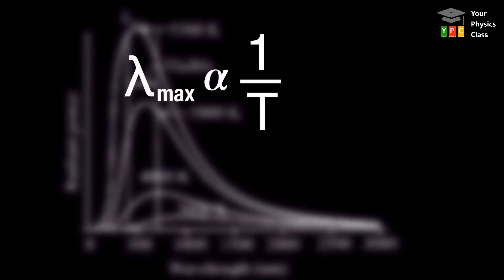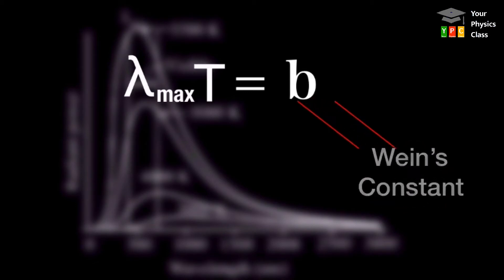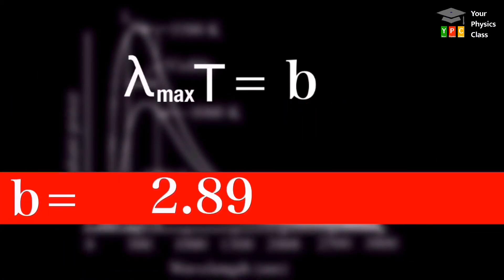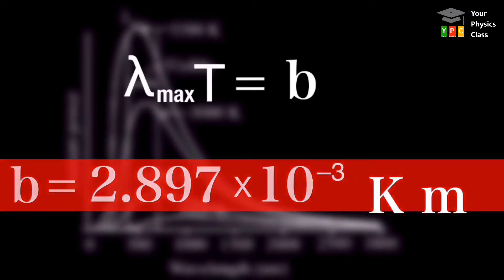The relation can be transformed into an equation as lambda max equals b times 1 by T, which can be written as lambda max T equals b. Mathematically, b is a proportionality constant, but here it has special significance. It is known as Wien's constant and its value is 2.897 times 10 raised to minus 3 Kelvin meter.